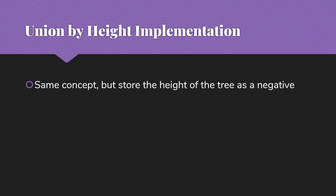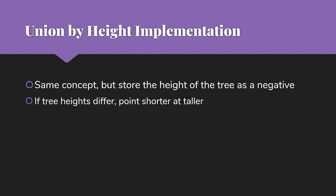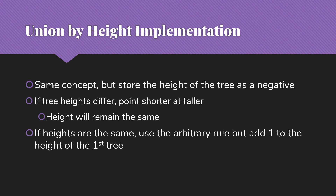Let's talk about the union by height implementation. We use the same concept as size, but instead of storing the number of nodes as a negative, we store the actual height of the tree as a negative. If tree heights differ, we simply point the shorter tree at the taller tree, and the result has the same height as the taller tree — so we make no changes to the height value. If tree heights are the same, we use the arbitrary rule and add one to the height of the first tree, the one being pointed at, because the overall height increases by one in that case.